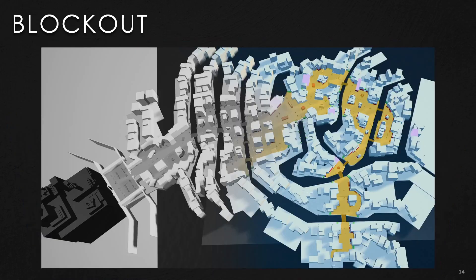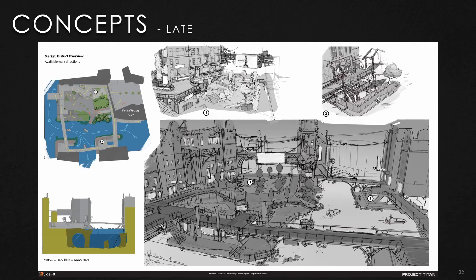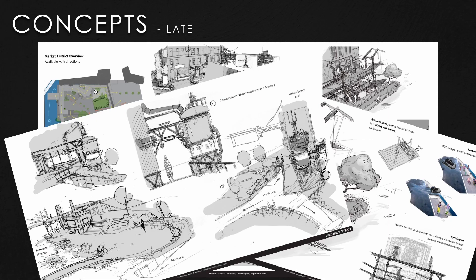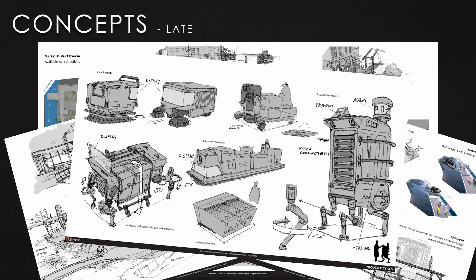A couple of months later we created a blockout, made by Chase - a blockout of what a level could look like. For our first visual target, we picked an area we called 'the market' and decided to polish it up into a final product. With that area in mind, Lino created some more concept sketches with structures a bit more defined, which was helpful for environment artists who came on board. We also had some robot designs, including the boat and the pizza boat that appear in the scene.